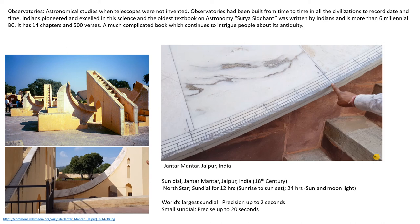In India, there had been a huge number of astronomical studies from the very beginning of civilization, even before telescopes were invented. Indians pioneered this science, and the oldest book on astronomy, the Surya Siddhanta, was written by Indians and is considered to be from around 6000 BC. It has 14 chapters and 500 verses — a complex work that continues to intrigue scholars about its antiquity. Based on descriptions in this book, many observatories were built in ancient universities, later destroyed by invaders. One of four surviving medieval observatories is still functional in Jaipur, housing the world's largest sundial, which can tell time with an accuracy of up to 20 seconds.